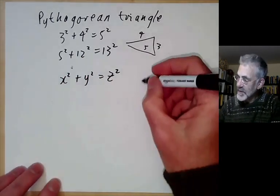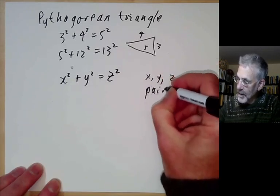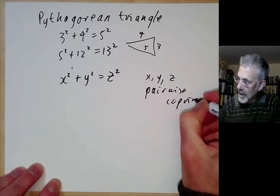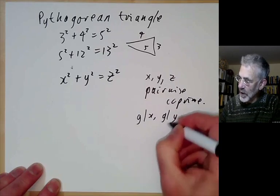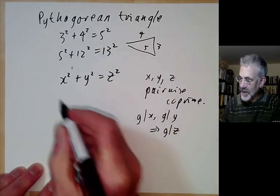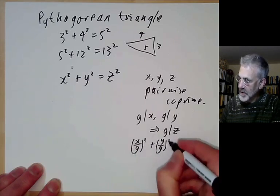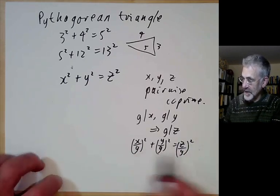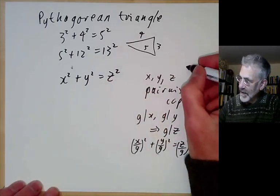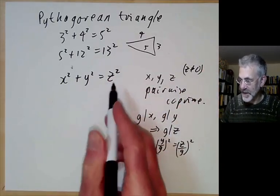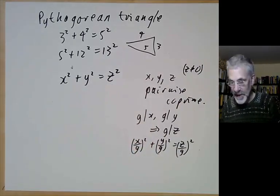The first thing we observe is we may as well take x, y, and z to be pairwise co-prime. Because if some number g divides x and g divides y, then g also divides z, and we can simply look at x over g squared plus y over g squared as a smaller solution. We also want z to be non-zero, because solving x squared plus y squared equals zero is not a terribly interesting problem.